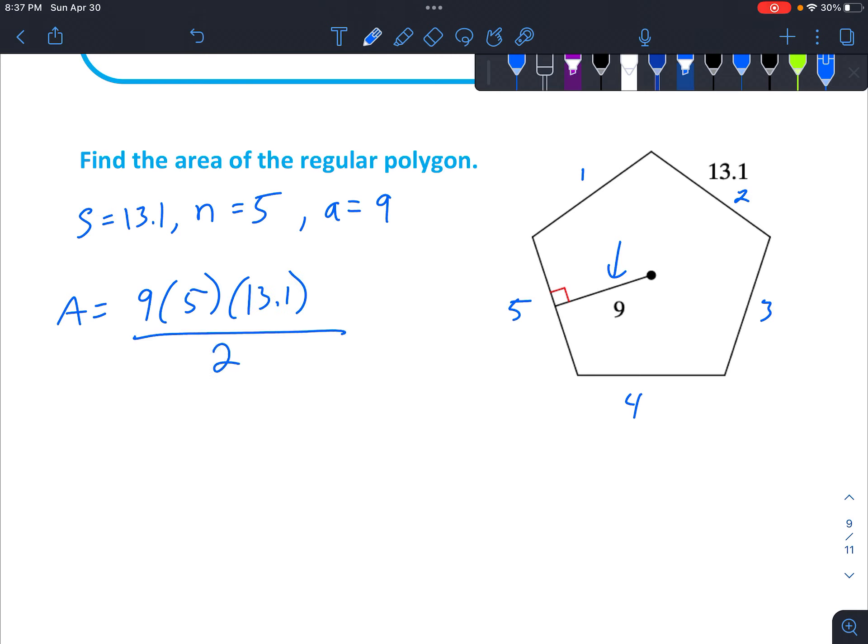Divide by two, which is the same as multiplying by one-half. Multiply your top together to get five hundred eighty-nine point five. Divide by two to get two hundred ninety-four point seventy-five. And once again, we don't have our units, but I'm going to put units squared.